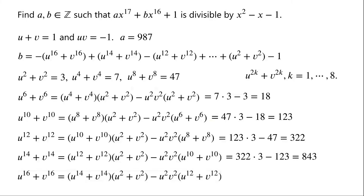u to the power of 16 plus v to the power of 16 can be written as u to the power of 14 plus v to the power of 14 times u squared plus v squared minus u squared times v squared times u to the power of 12 plus v to the power of 12, which is equal to 843 times 3 minus 322, which is equal to 2207.